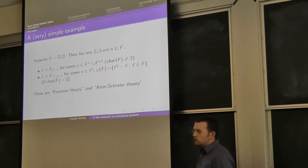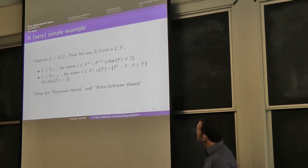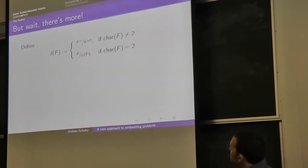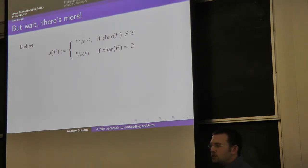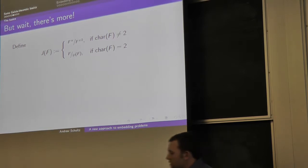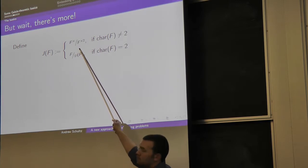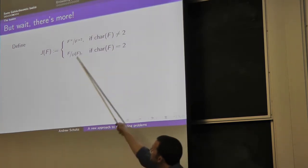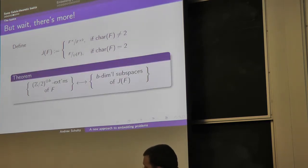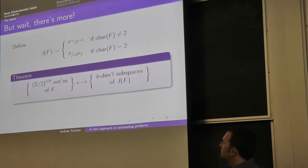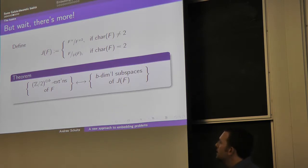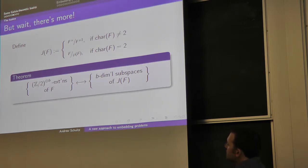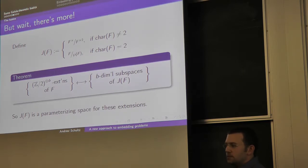These two cases have names: the first is called Kummer theory and the second is Artin-Schreier theory. There's something deeper going on: define J(F) as an F₂ vector space. When characteristic is not 2, take the non-zero elements of the field mod the squares. In characteristic 2, take the additive group F mod P(F). It turns out that Z/2Z × Z/2Z × ⋯ extensions correspond exactly to certain subspaces of J(F), giving a nice linear algebra way to parametrize these Galois extensions.